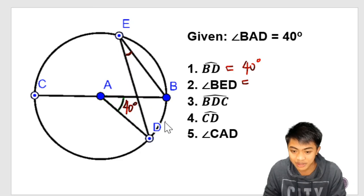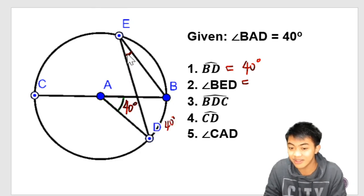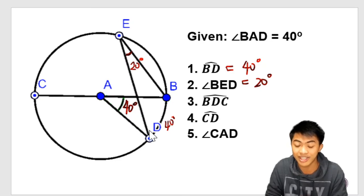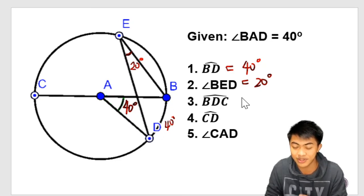Angle BED. So arc BD is 40 degrees. So this arc is 40 degrees. This will measure? Yes, 20 degrees. Why 20 degrees? Because this is an inscribed angle, and the measure of an inscribed angle is one-half the measure of its intercepted arc. So that is 40 degrees divided by 2.